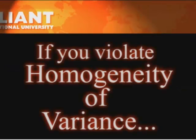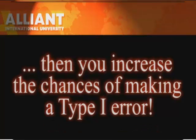Generally, if you violate homogeneity of variance, it increases your chances of making a Type 1 error, because this usually comes from violations of normality of your distribution. There are ways that you can check your homogeneity of variance.